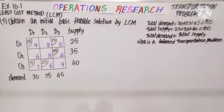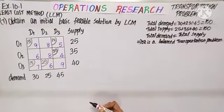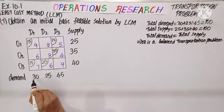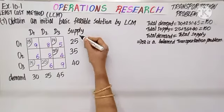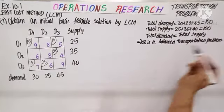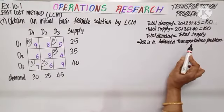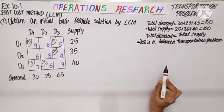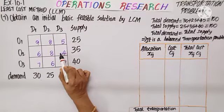Before allocations, let us check whether total demand and total supply are equal. Total demand: 30 plus 25 plus 45 is 100. Total supply: 25 plus 35 plus 40 is also 100. Total demand and total supply are equal, so the given problem is a balanced transportation problem. The least cost here is 4.